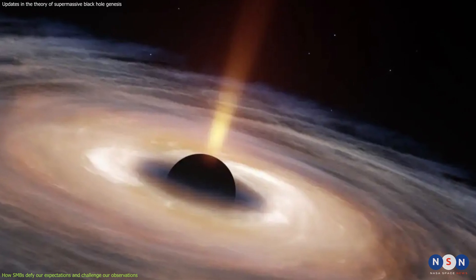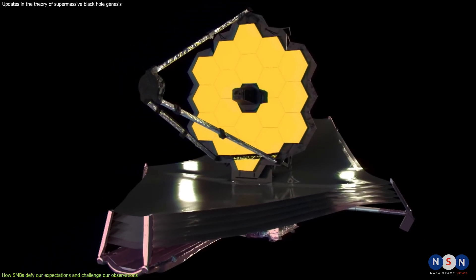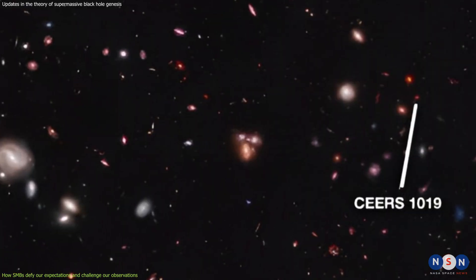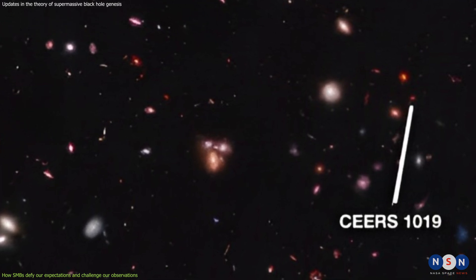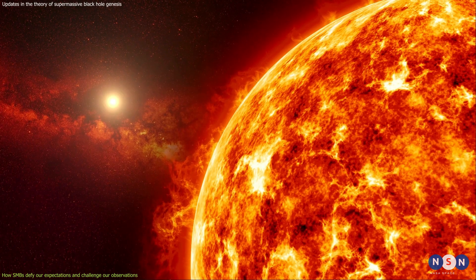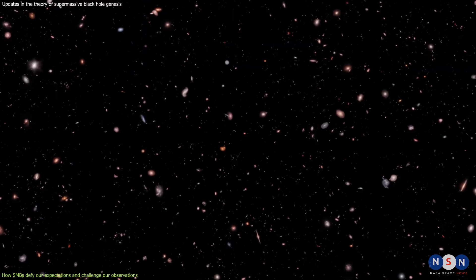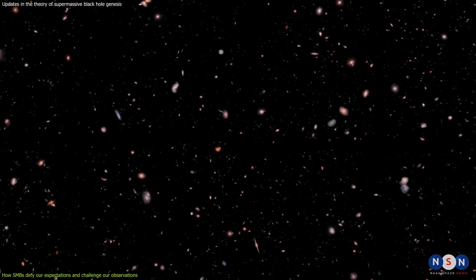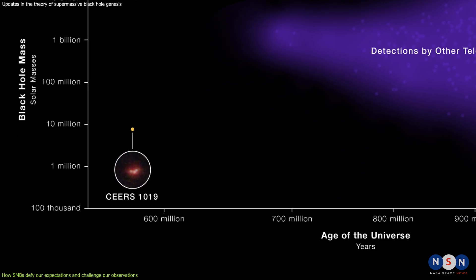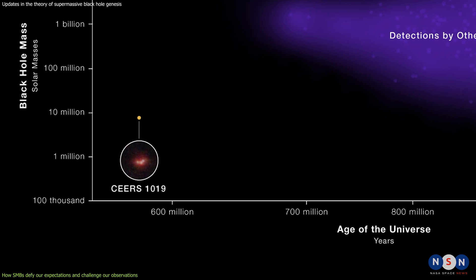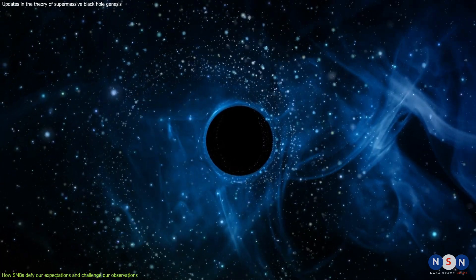One clue comes from some recent discoveries made by powerful telescopes like the James Webb Space Telescope. One of its first discoveries was CEERS 1019, a quasar powered by a supermassive black hole with a mass of 1.6 billion times that of our sun, located 13 billion light years away from us. This means that we are seeing this quasar as it was when the universe was only 700 million years old.